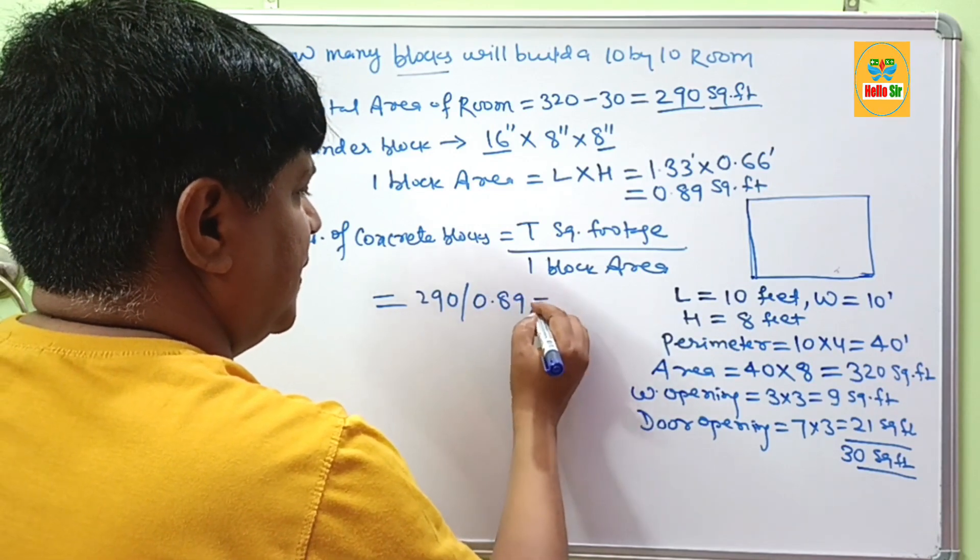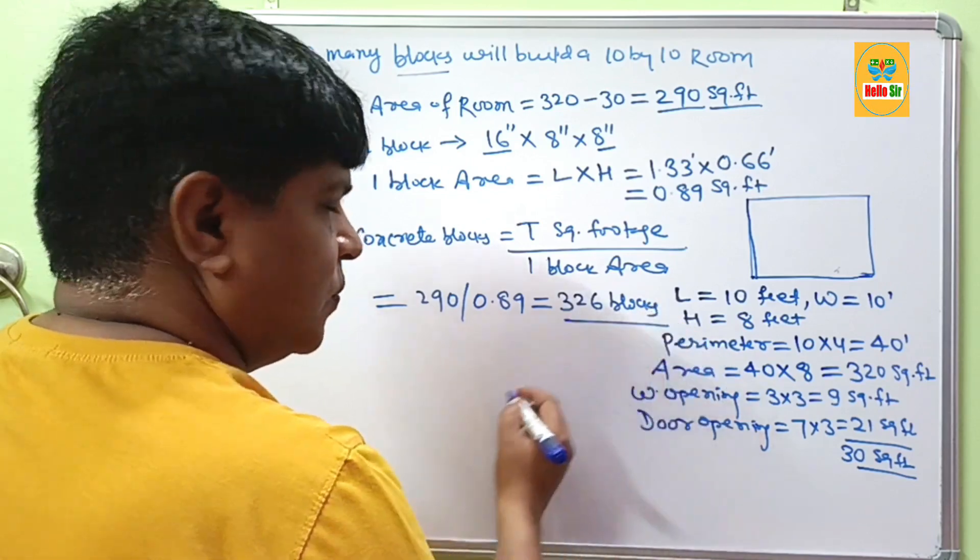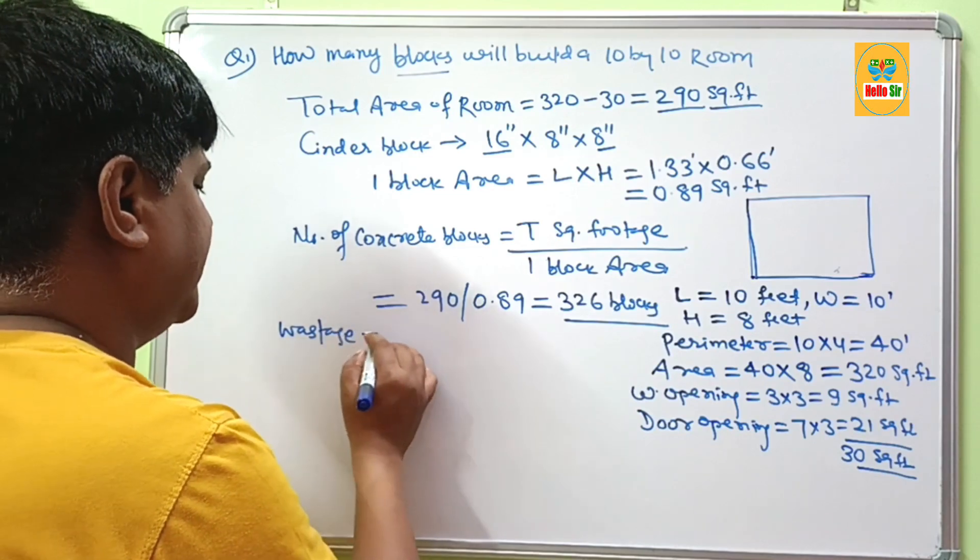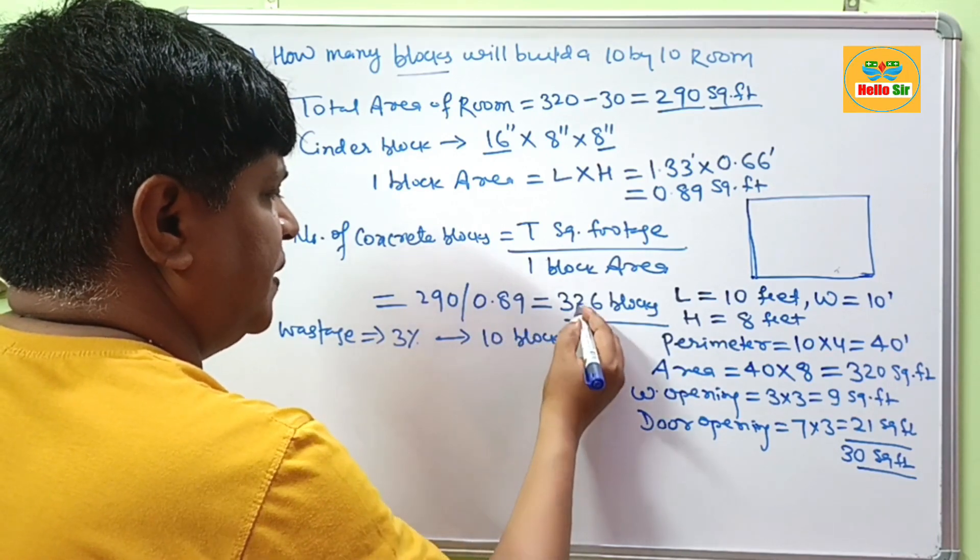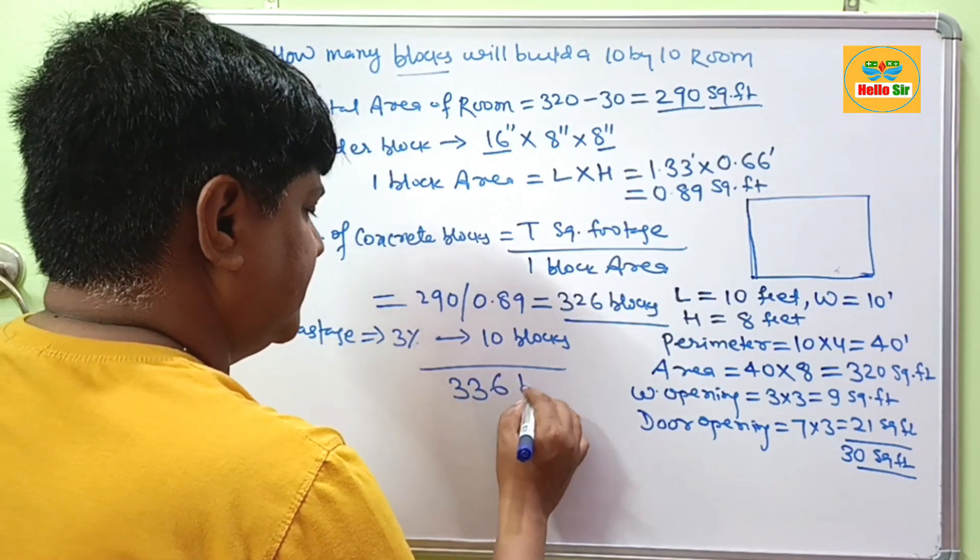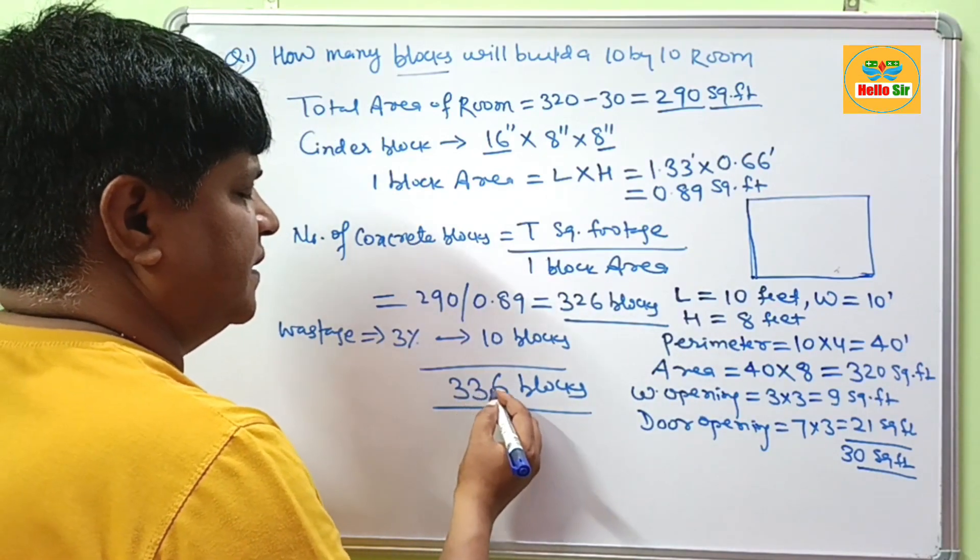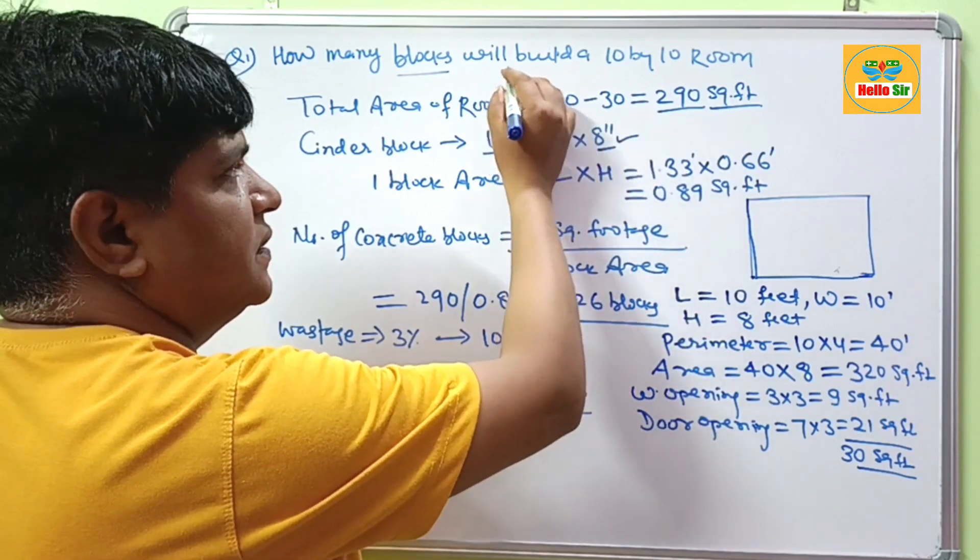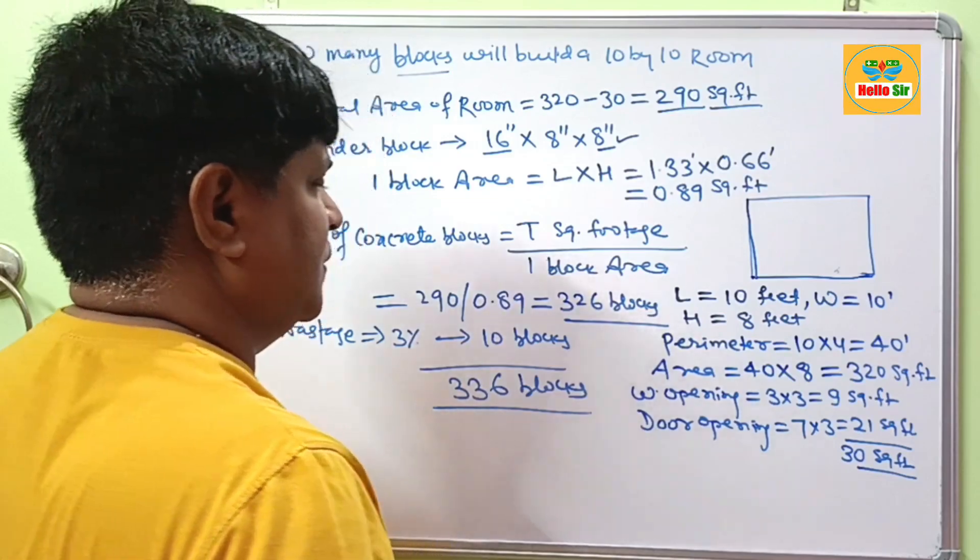For safety, a wastage factor of about 3% equals about 10 blocks. Adding both together, you get 336 blocks. This means approximately 336 blocks of standard concrete block size are required to build a 10 by 10 foot room. Thank you.